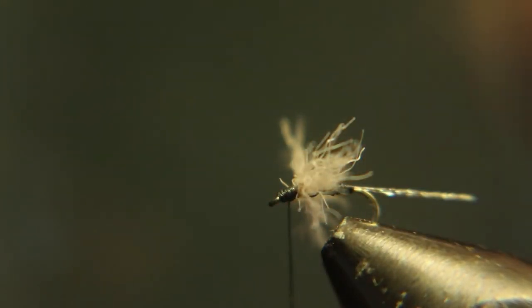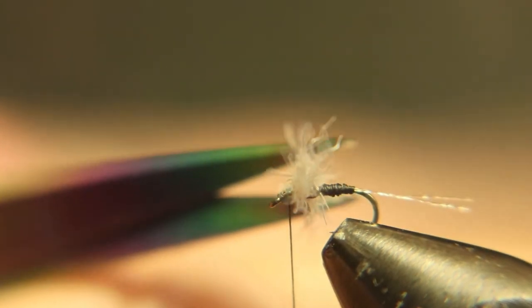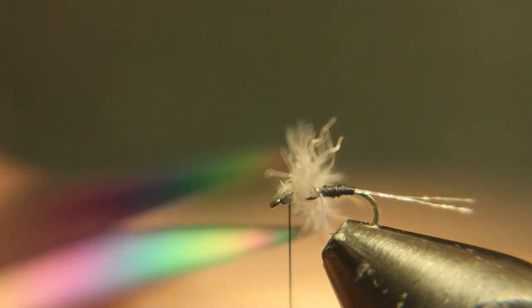Now you want to trim the wings the same length of the body. Make sure they're the same on both sides of the fly.